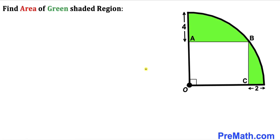Welcome to pre-math. In this video we have got rectangle OABC inscribed in a quarter circle, such that the horizontal distance at one edge is 2 units whereas the vertical distance on the other edge is 4 units. We are going to calculate the area of the green shaded region.